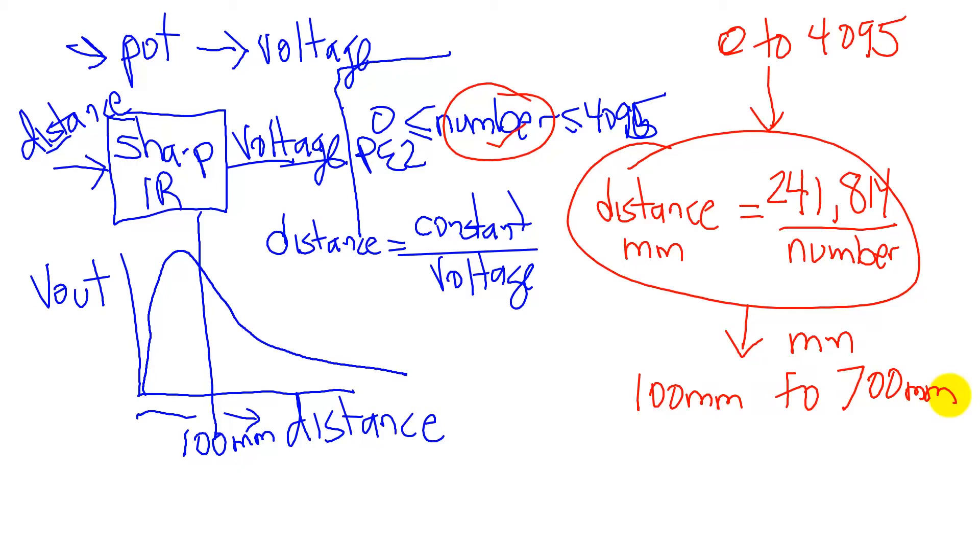So just to recall, the voltage to distance graph here is non-linear, whereas for our potentiometer, the voltage to distance, if you think of the potentiometer as measuring distance, then that would be a linear graph. That's correct.